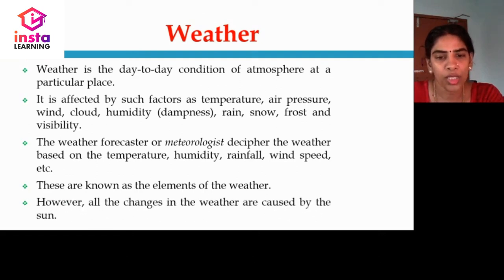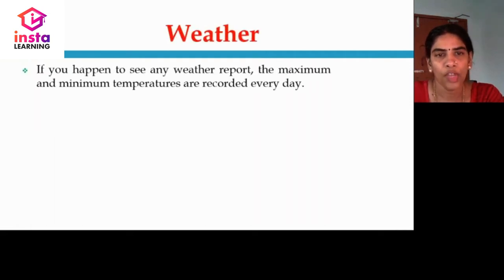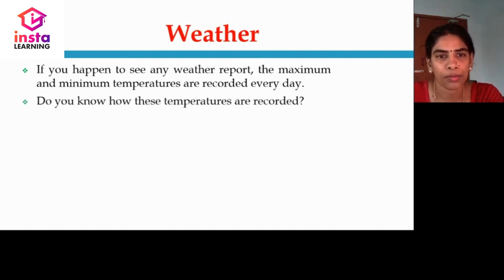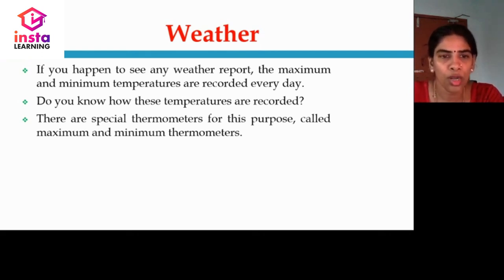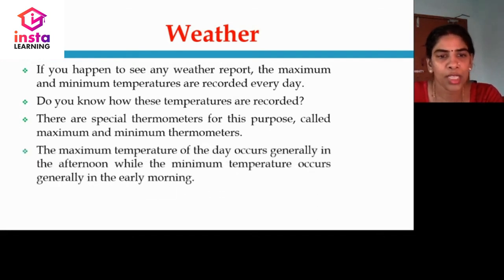All the changes in the weather are caused by the sun. If you look at any weather report, you can see that the maximum and the minimum temperatures are recorded every day. Special thermometers are used for these purposes — called maxima thermometers for maximum temperature and minima thermometers for minimum temperature. The maximum temperature of the day usually occurs in the afternoon, while the minimum temperature occurs in the early morning.